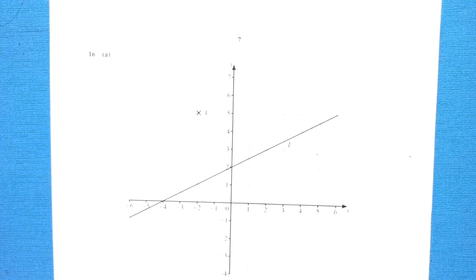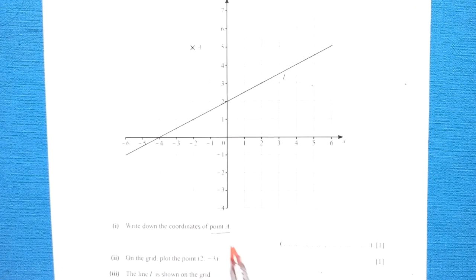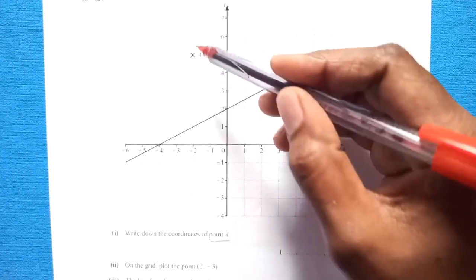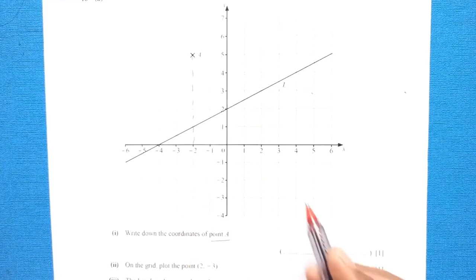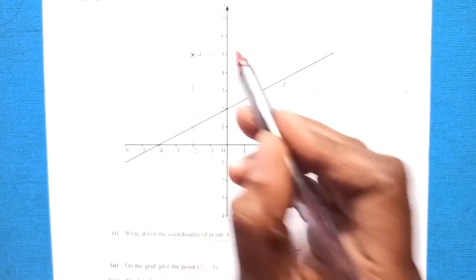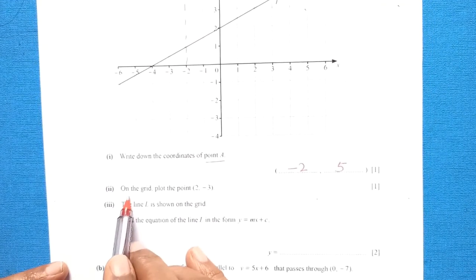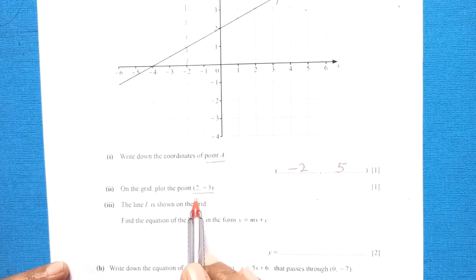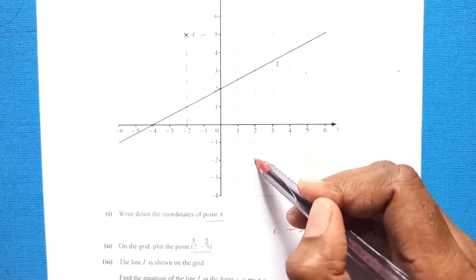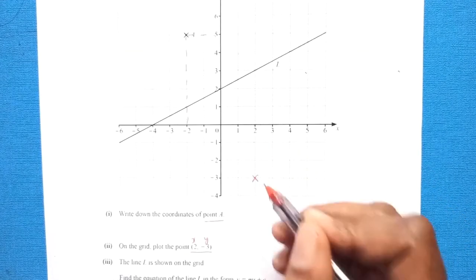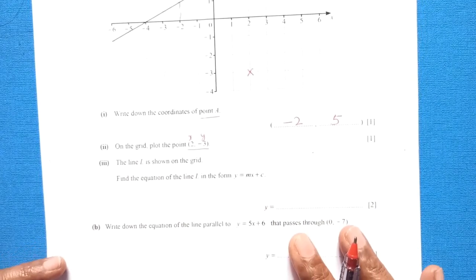Question 16 part a: write down the coordinates of point A. Going along the x-axis it is −2, and up the y-axis it is 5, so the answer is (−2, 5). Part b: plot the point (2, −3). x = 2, y = −3, so we go 2 right and 3 down to mark the point.